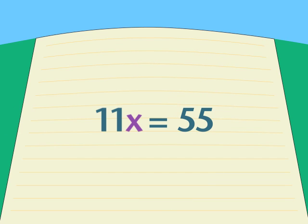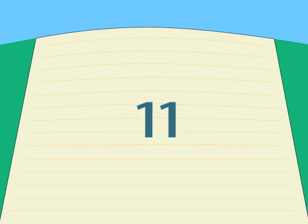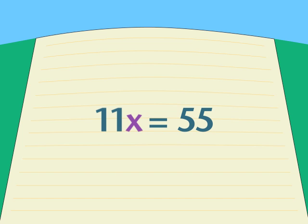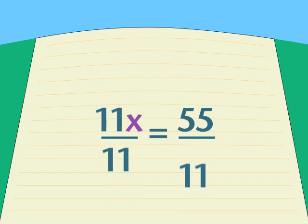I want a number that will remove that 11 and leave a simple x on the left side. The number that will do that is 11, and happily, it also goes evenly into 55. I divide both sides by 11 and find x equals 5.